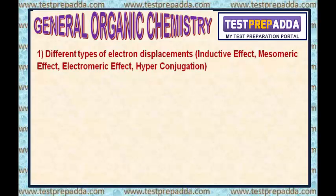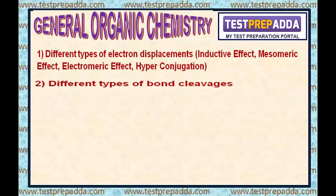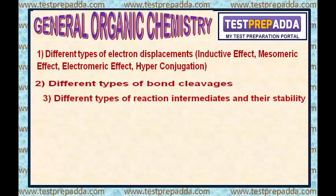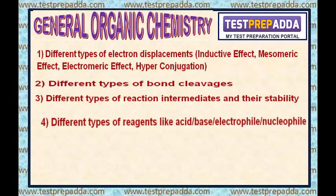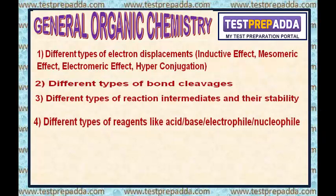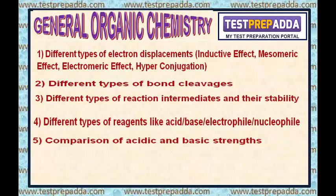Number 2, different types of bond cleavages. Number 3, different types of reaction intermediates and their stability, like carbocation, carbanion, and free radical. Number 4, different types of reagents like acid, base, electrophile, and nucleophile. 5th, comparison of acidic and basic strength of different compounds.